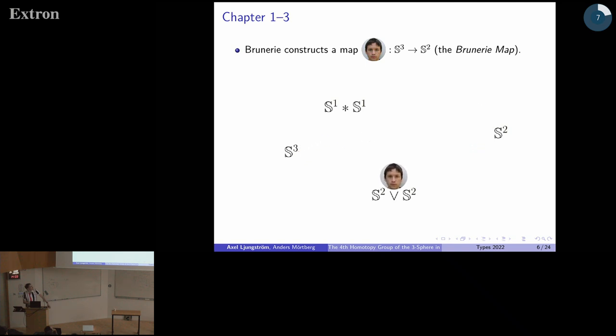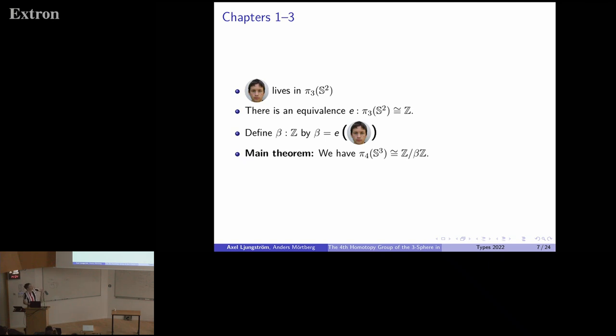The idea here is Brunerie constructs a map from S3 to S2, which I've animated here using MS Paint and some other tools. For those of you who know, this is a whitehead product of the generators of Pi 2 of S2. It doesn't matter at all what it is. We can stop looking at this now.